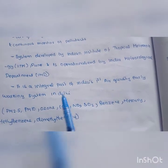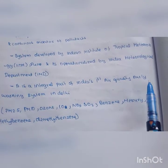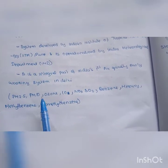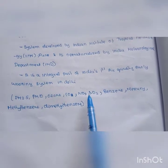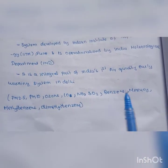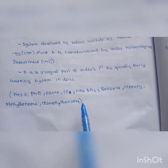System developed by Indian Institute of Tropical Meteorology, Pune and Indian Meteorological Department. This is an integrated part of air quality early warning system in Delhi. Monitors PM 2.5, PM 10, ozone, carbon monoxide, nitrogen dioxide, sulfur dioxide, benzene, mercury, methyl benzene, and dimethyl benzene.